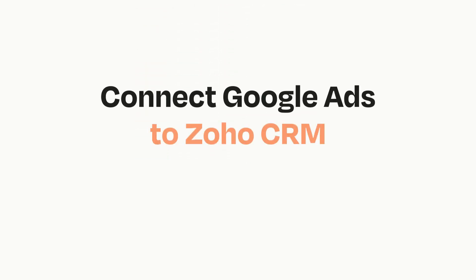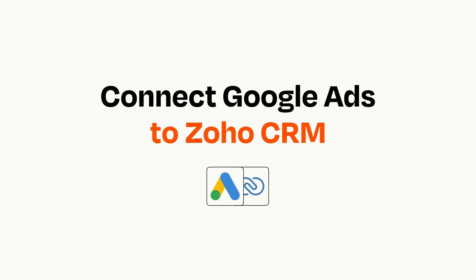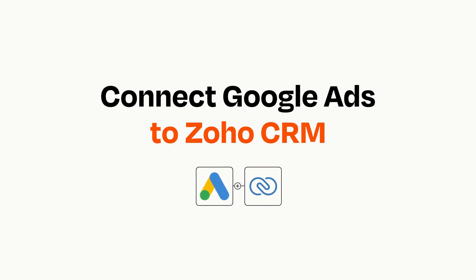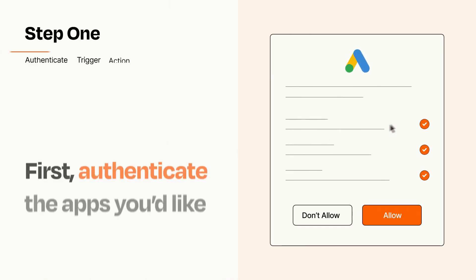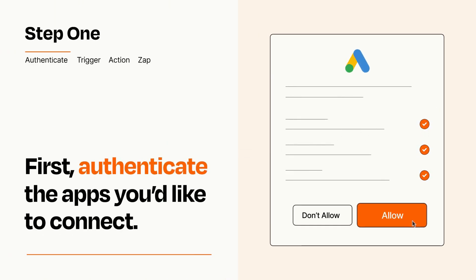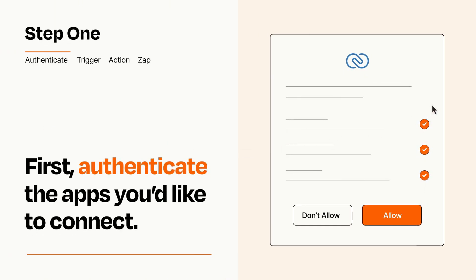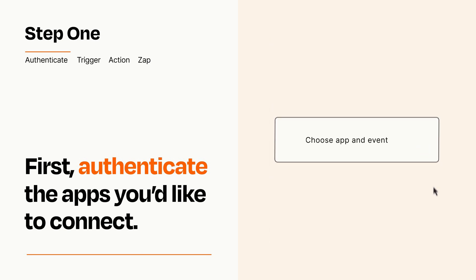Connecting these apps has never been easier because you can do it with Zapier, which helps every person and every business create automated workflows. It's easy. To get started, you'll just need to authenticate your apps, which takes just a few seconds. Zapier meets industry standards for encryption when connecting with each of your apps.